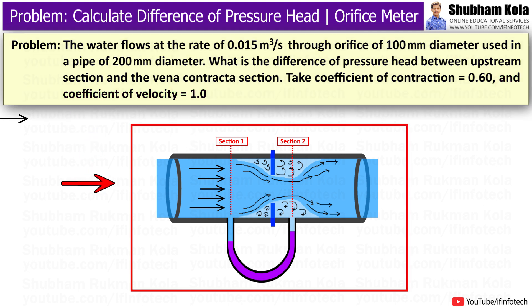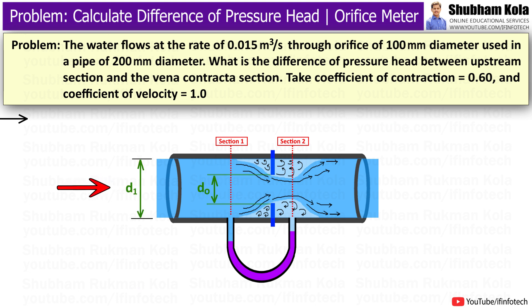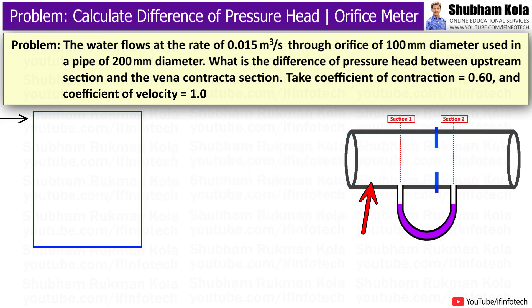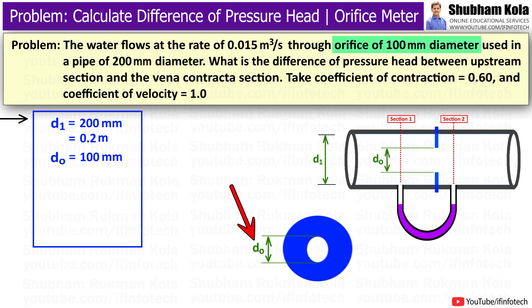To solve this problem, first I will draw the diagram of orifice meter and note down the given data. Let us consider this is the pipe whose diameter value is 200 mm, i.e. 0.2 m, denoted as d₁, in which the orifice plate is placed with diameter 100 mm, i.e. 0.1 m, denoted as d₀.